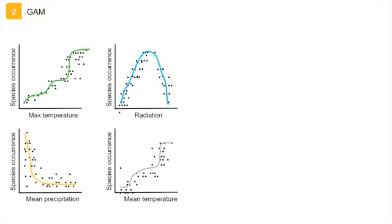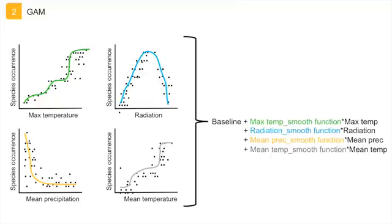In the final model, the smooth functions of each of these variables are added. Because GAMs are additive, it is difficult to include interactions between predictors, and this is not often done. There are a lot of different smoothing functions available, but in species distribution models, the most widely used is the cubic smoothing splines method.